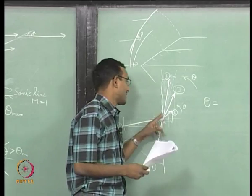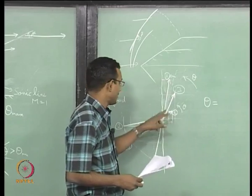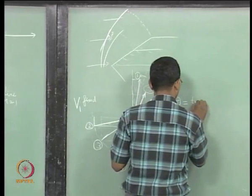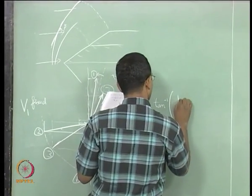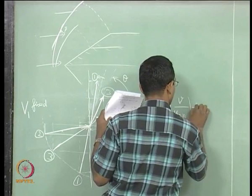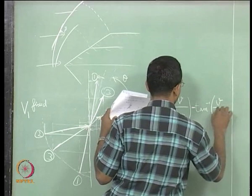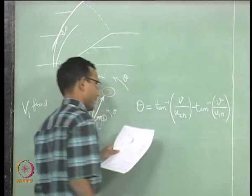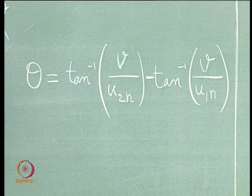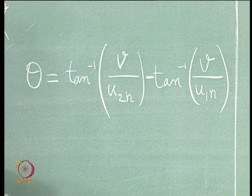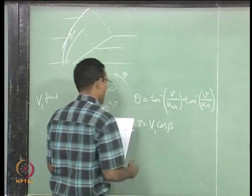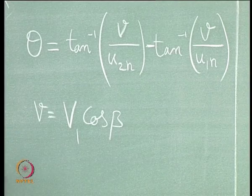I want to find angle theta mathematically. It is tan_inverse(V / U2_normal) minus tan_inverse(V / U1_normal). This is the formula for theta. We know V = V1 cos beta and U1 normal = V1 sin beta, which is how we got M1 normal = M1 sin beta.